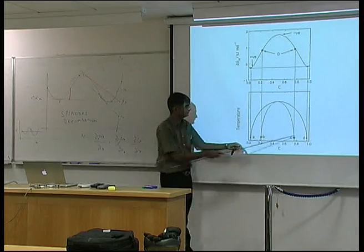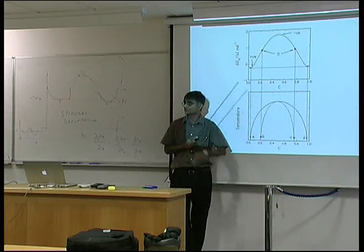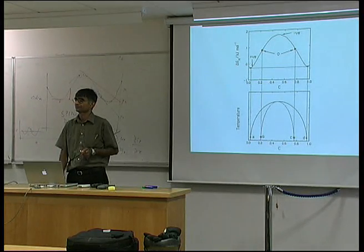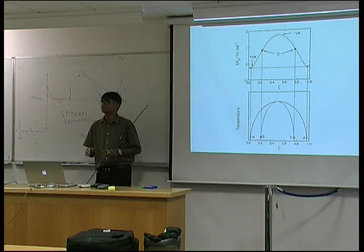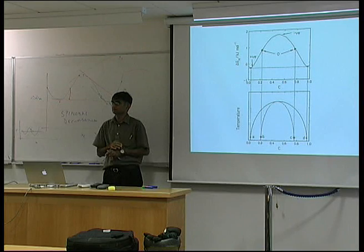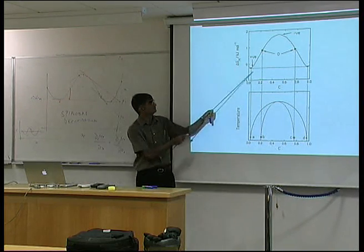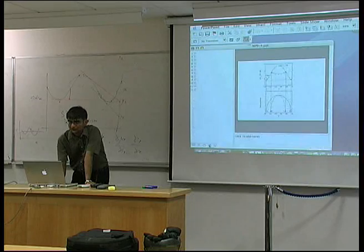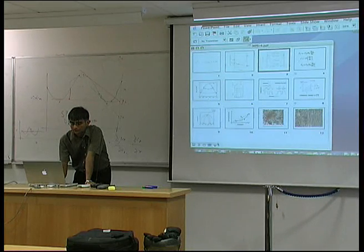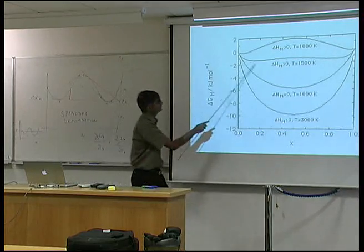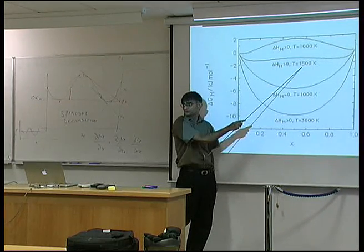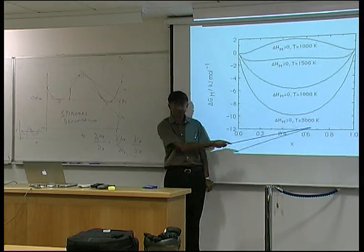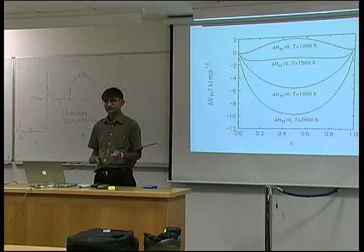Each of these points comes from one of these common tangent constructions. As I raise temperature, you favour mixing and this curve actually changes into one without two minima. These curves have two minima at low temperatures, but the two minima have disappeared at very high temperature because entropy wants everything to be mixed up.